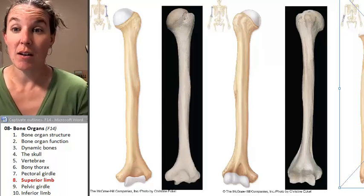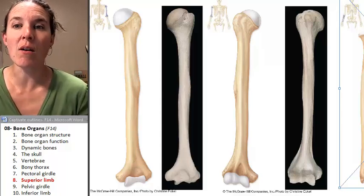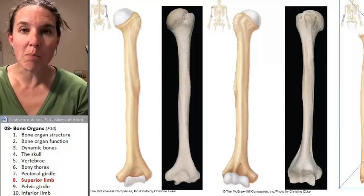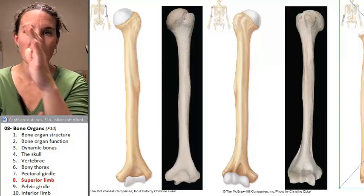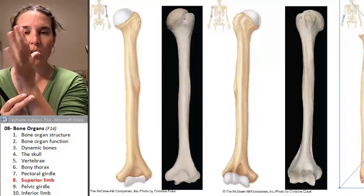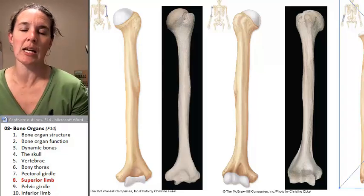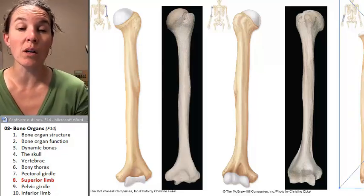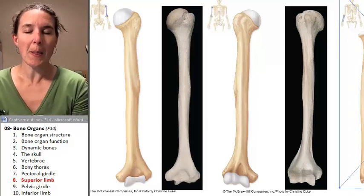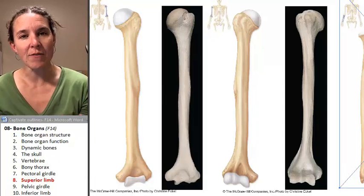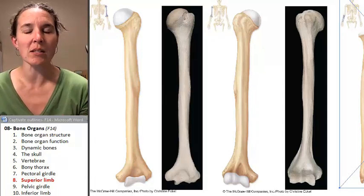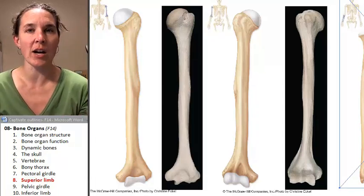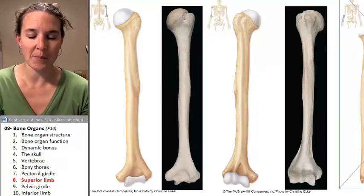Superior limb. There are three bones in your arm that don't include wrist and hand that you need to know, and they're all long bones. You can identify them based on their ends.